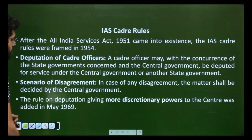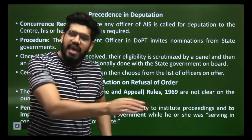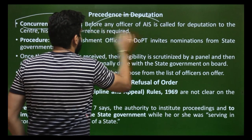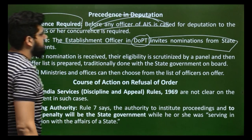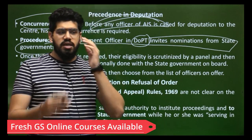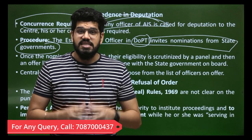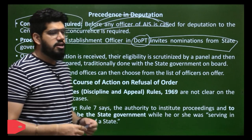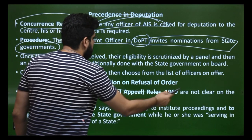This matter came into news because the state denied the order of the centre, resulting in a show cause notice being issued to the ex-chief secretary of West Bengal. The concurrence of the IAS officer is required, and the procedure involves the Establishment Officer in DOPT — the Department of Personnel and Training — inviting nominations from state governments. A panel in DOPT then scrutinises the nominations and decides who shall be sent for deputation. If someone denies the order, there is a course of action on refusal.